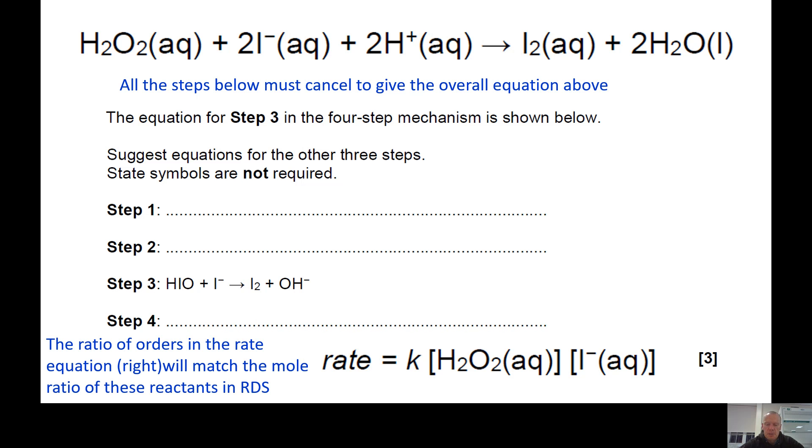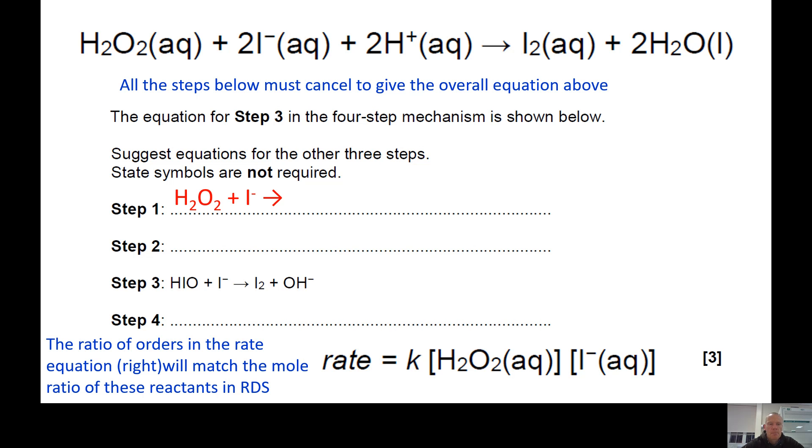A clue that you can use to start off with is the ratio of orders in the rate equation will match the mole ratio of those reactants in the rate determining step. So in our rate determining step which I'm choosing to make step one, I've got one mole of H2O2 and one mole of I- because the order with respect to each of those in the rate equation is one, so it's a one to one mole ratio.